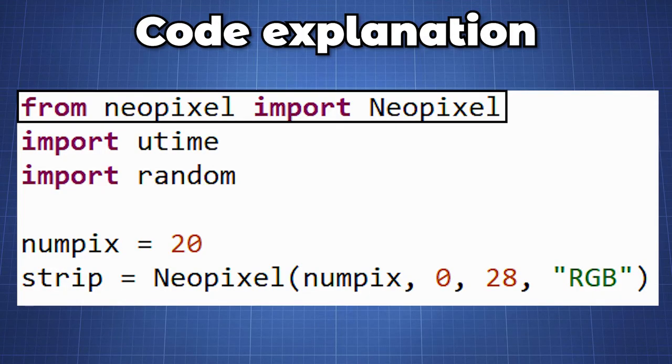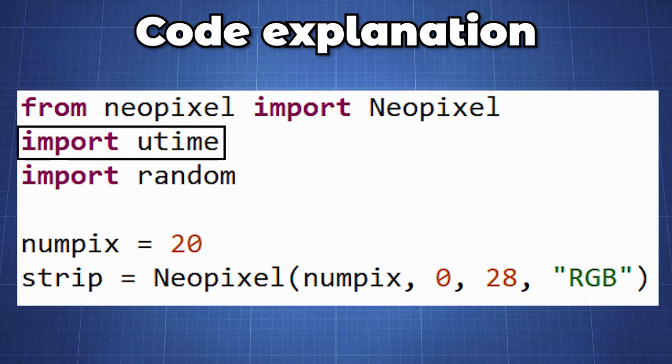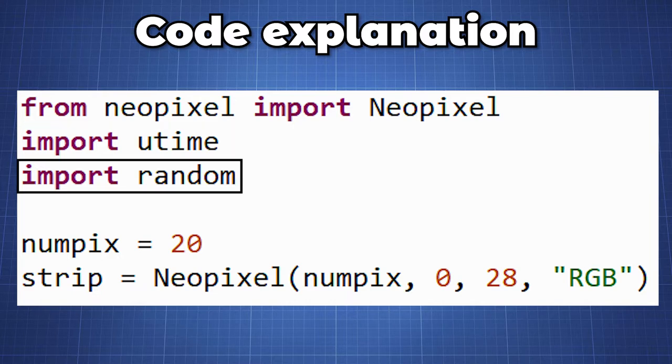In our first line we will import the Neopixel from the neopixel library that we have added to the Pico. We import the utime library to use the sleep function for delay and random library to generate a value that will be used later in our code.